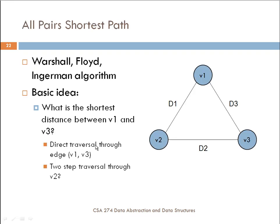The algorithm we're looking at was conceived by Warshall, but then implemented by both Floyd and Ingerman. The basic idea is this: suppose I have a graph with three nodes, where the edge weights are D1, D2, and D3, and the vertices are V1, V2, V3. The question is: what is the shortest distance between V1 and V3? The distance D3 could be greater than D1 plus D2, so it could be shorter to go through vertex V2 than to go directly from V1 to V3.